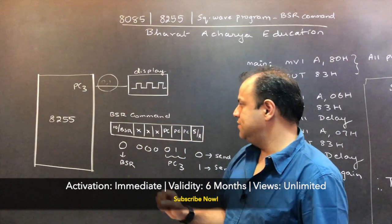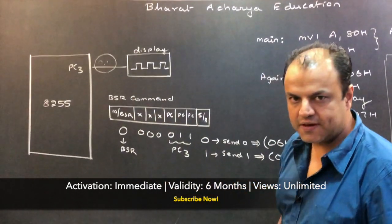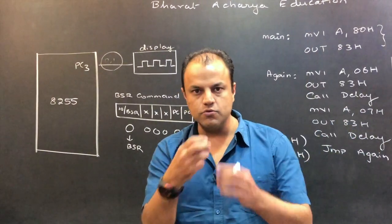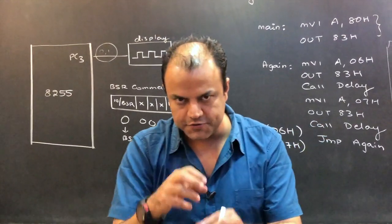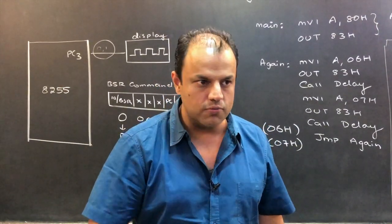Look here. Now, first things first, you got to understand how to form the BSR command to send a 0, send a 1. Once you form the command, those command values will be put in A register. You'll be using out instruction at the correct address of the control word.